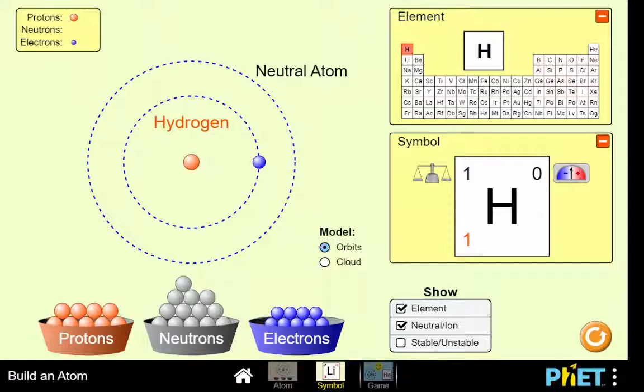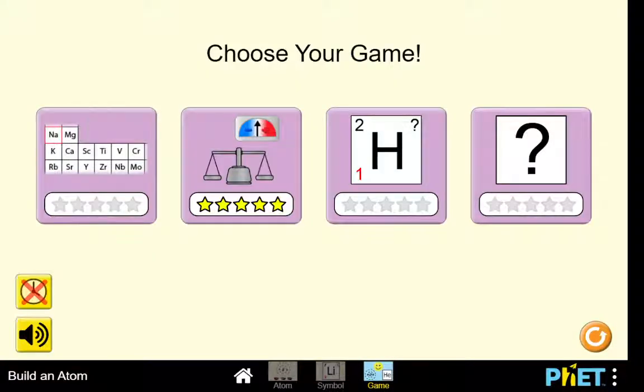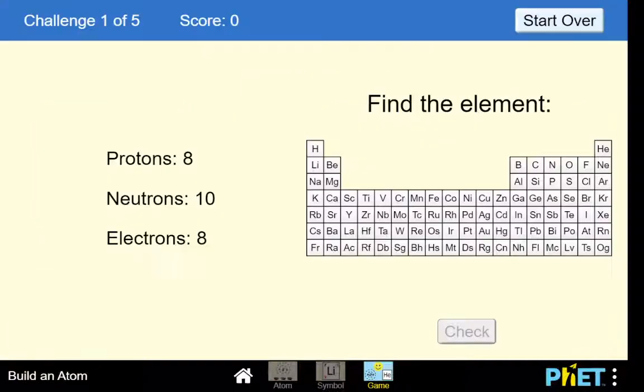And finally, to finish off the lab, you get to test yourself with a little game. There's four different games you can choose from. All of them have to relate with all the things that you just went through. So you can go find the element with 8 protons, 10 neutrons, and 8 electrons, and continue to test yourself in that kind of way.